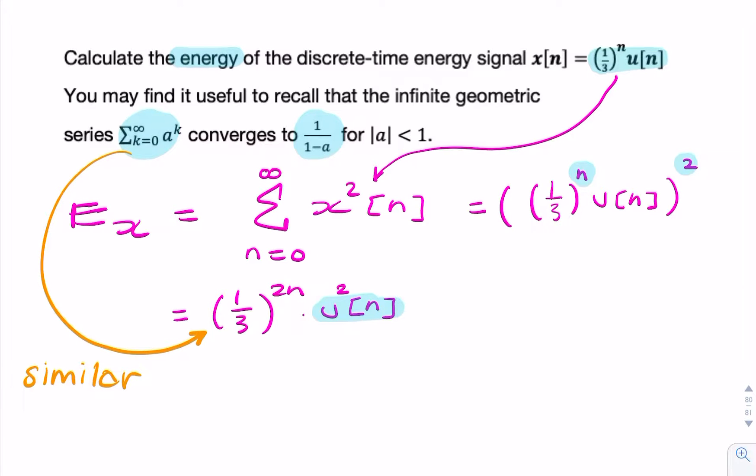What we can do is simplify E_x just a little bit. It will look like this: 1 over 3 squared, to the power n, times u[n]. And now that looks very much like the given formula.